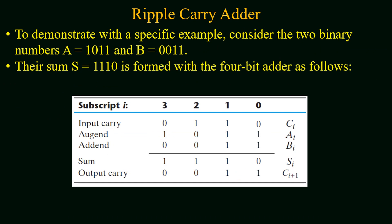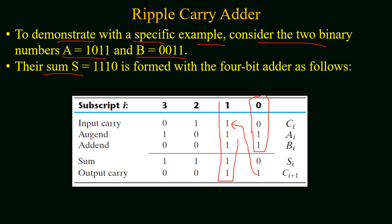To demonstrate with a specific example, consider two four-bit binary numbers: A = 1011 and B = 0011. As per the rules, corresponding bits are added starting from the least significant bit. One and one are added first, giving a sum of zero and a carry of one. That carry is transferred and added at the next stage with bits one and one.